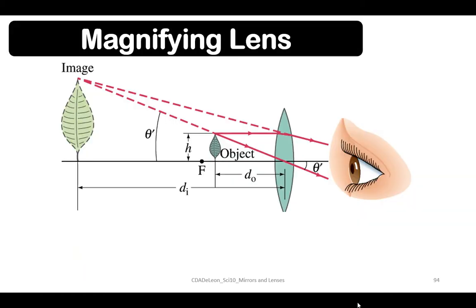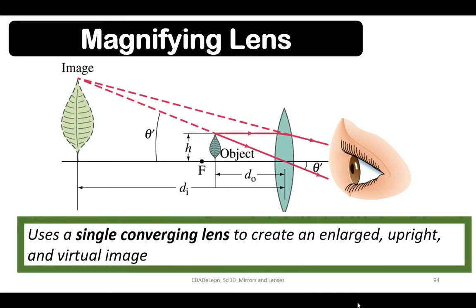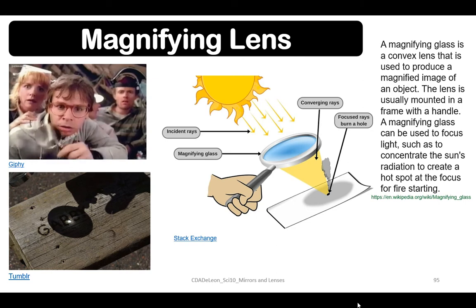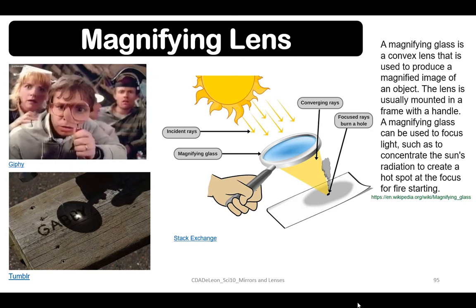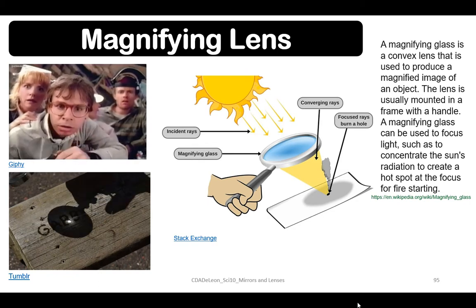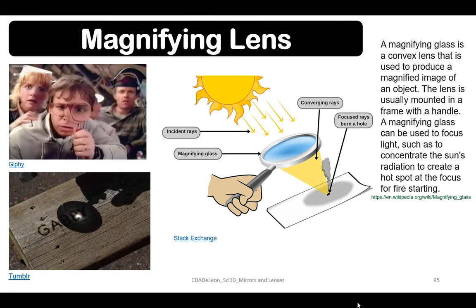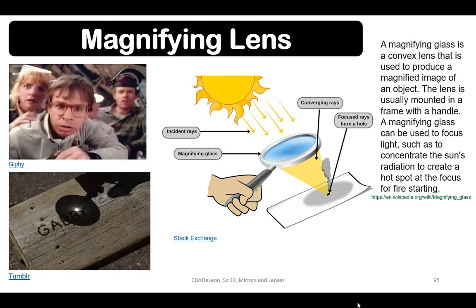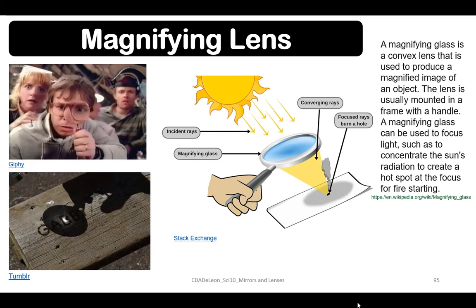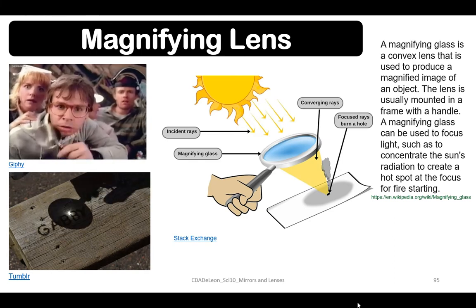Now let's discuss the magnifying lens. A magnifying lens uses a single converging lens to create an enlarged, upright, and virtual image. A magnifying glass is a convex lens used to produce a magnified image of an object. The lens is usually mounted in a frame with a handle. A magnifying glass can also be used to focus light, such as concentrating the sun's radiation to create a hot spot at the focus for fire starting.